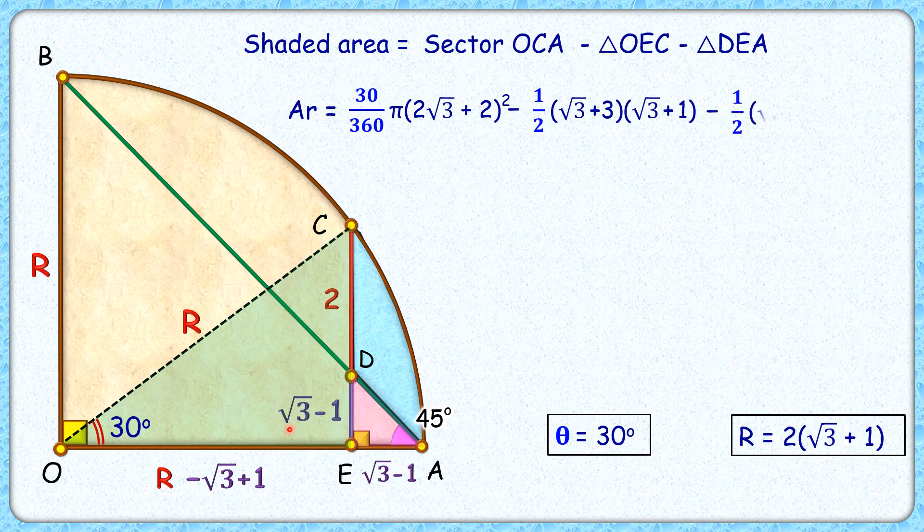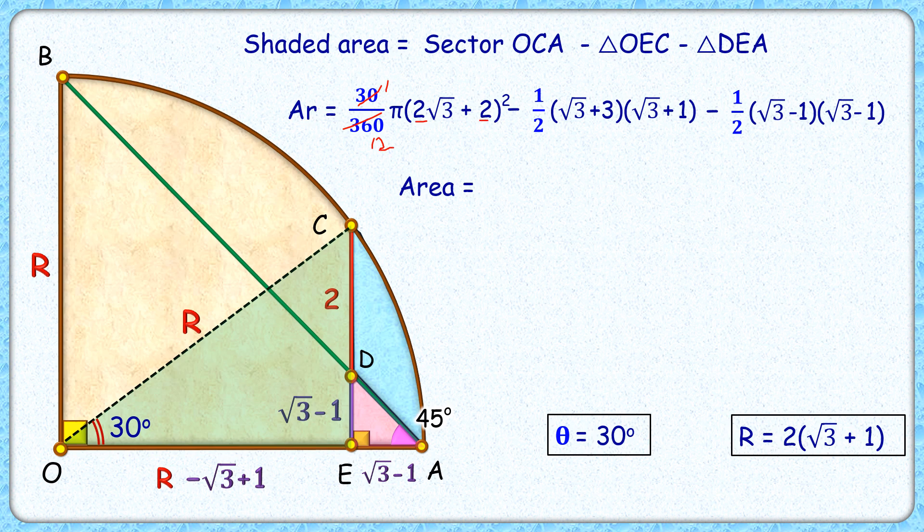Simplifying it, we'll get area as 1 upon 12. When you simplify, 4 will come out and we'll get area of sector reduced down to 2 by 3 times pi times 2 plus root 3. Area of the green triangle reduces to 3 plus 2 root 3, and area of the pink triangle is 2 minus root 3.